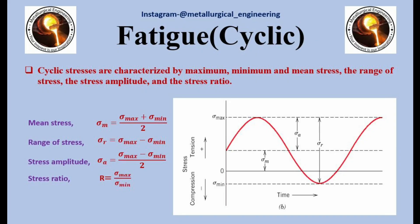Many terms are used in describing fatigue fracture: mean stress, range of stress, stress amplitude, and stress ratio. Mean stress equals maximum stress plus minimum stress divided by 2. Range of stress is the difference between maximum and minimum stress. Stress amplitude is half of the range of stress. Stress ratio is maximum stress divided by minimum stress. These terms can also be seen in the figure.